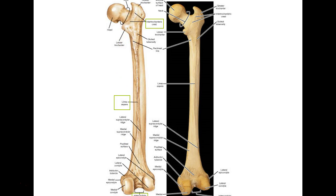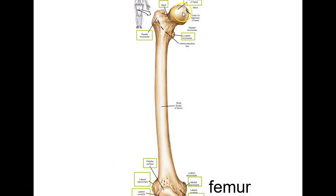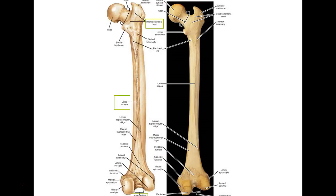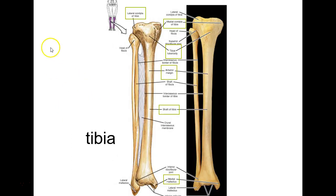Counting up the femur landmarks: head, neck, two trochanters, fovea, two epicondyles, two condyles, patellar surface, intertrochanteric crest, linea aspera, intercondylar fossa — about thirteen landmarks total.